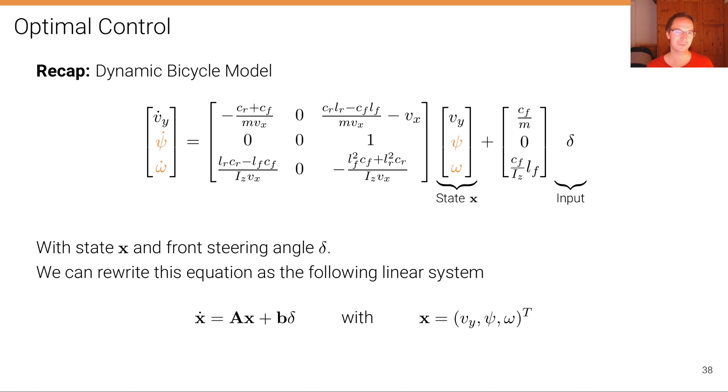Let's recap the dynamic bicycle model as an example. This is the equation for the dynamic bicycle model that we have seen in the last lecture, with state x that comprises the lateral velocity.